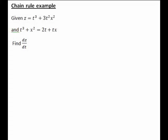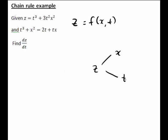Let's have a look at an example of using the multivariate chain rule. We're told that z equals t cubed plus 3t squared x squared, so therefore in this case z is a function of x and t. We can also represent that on a tree diagram as follows.